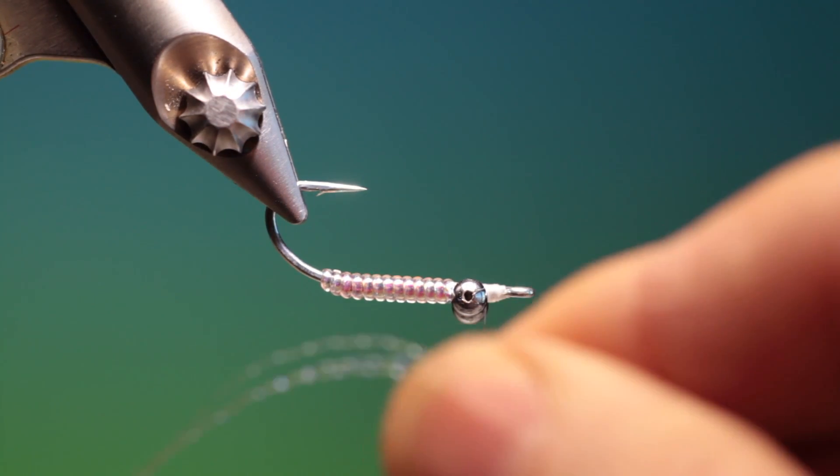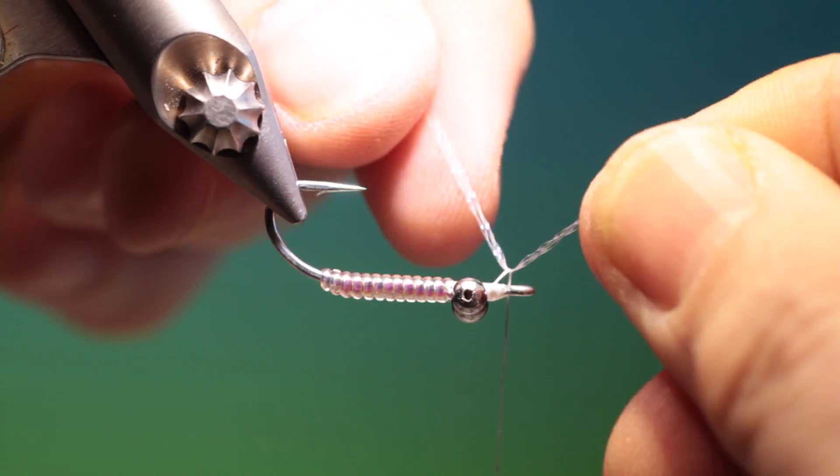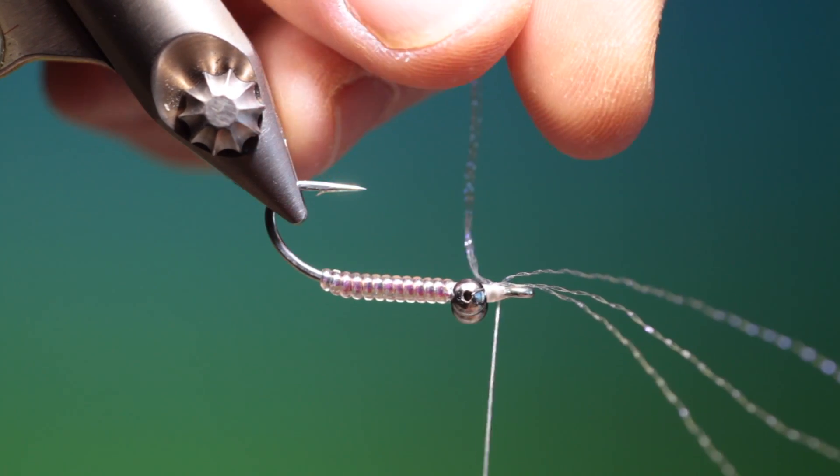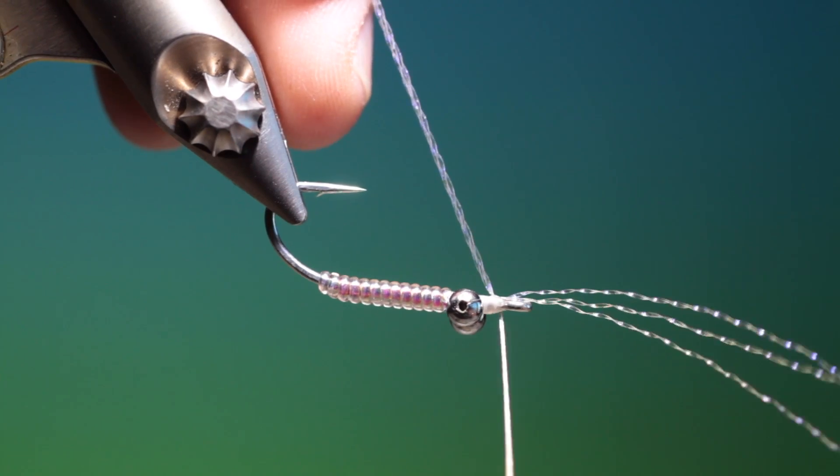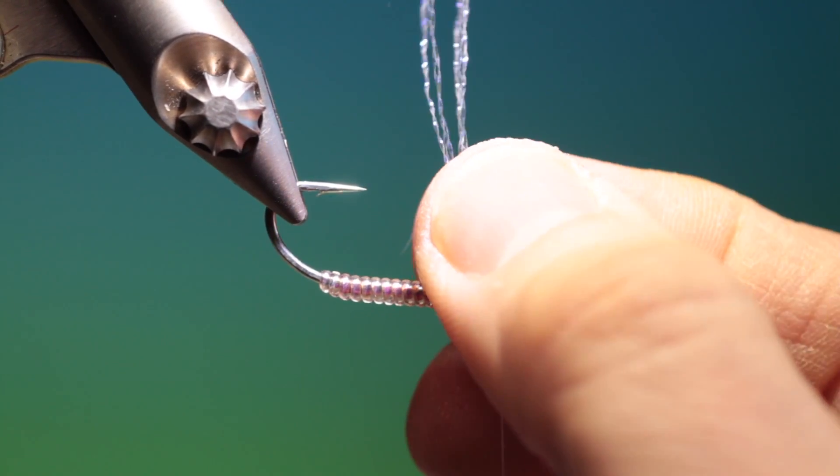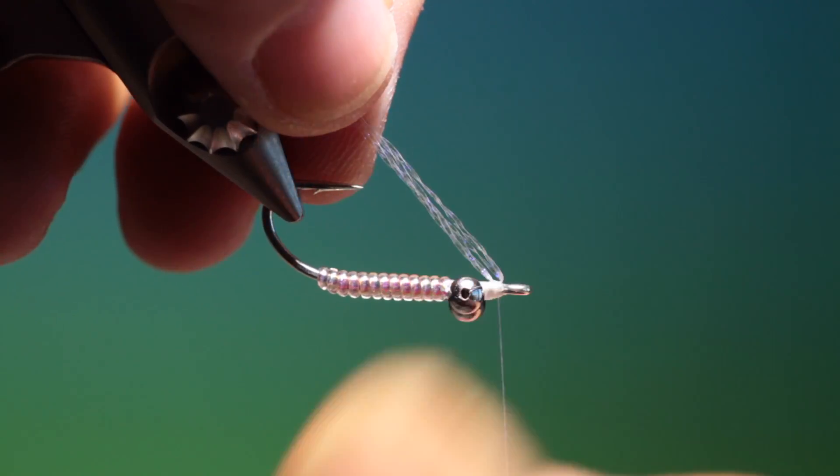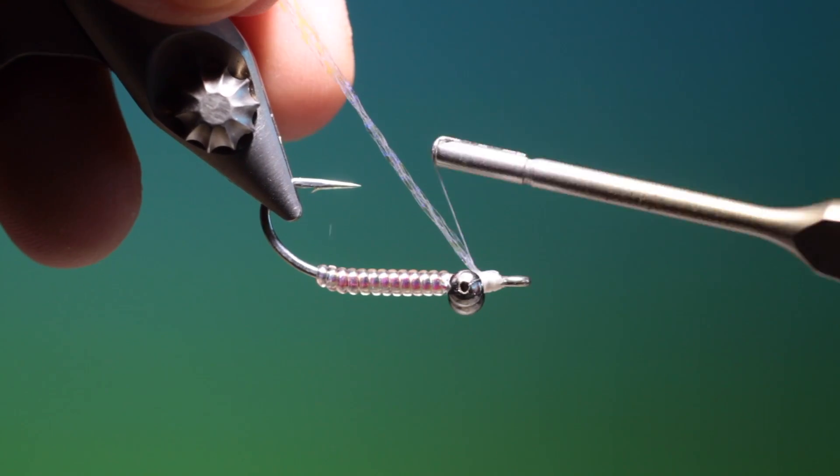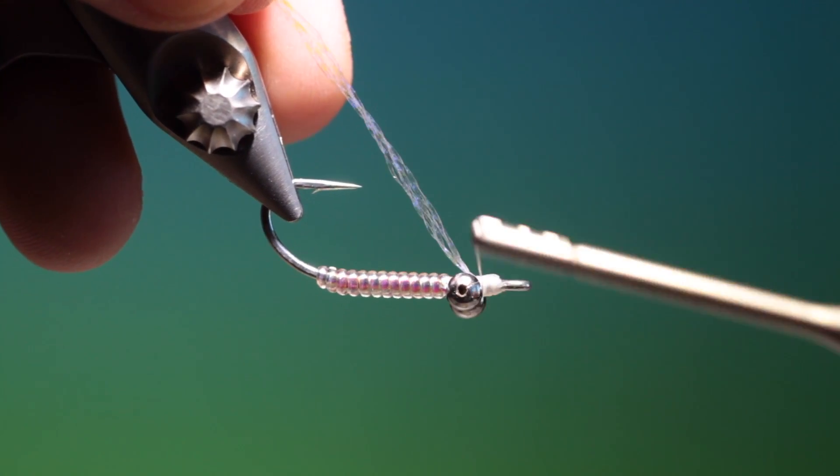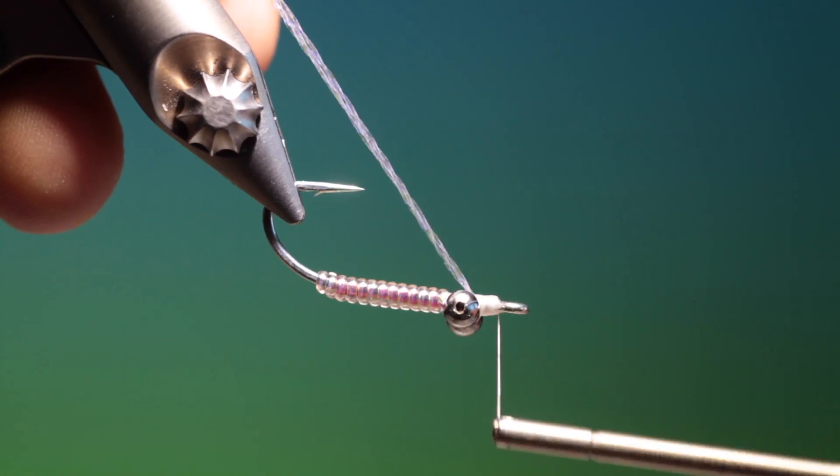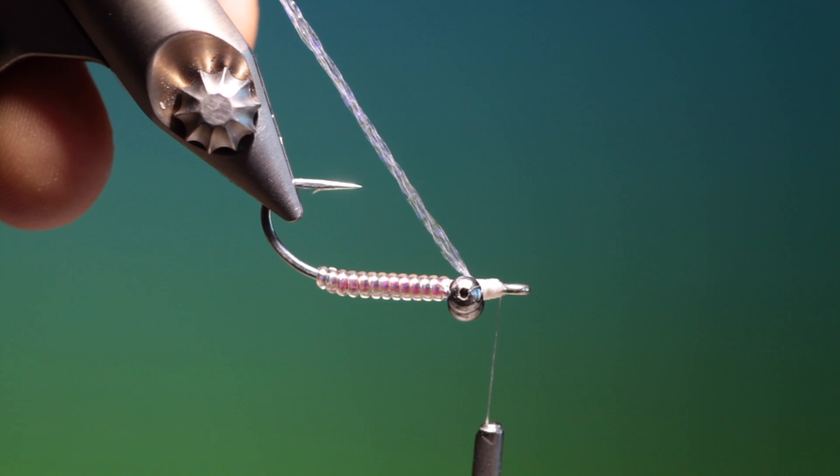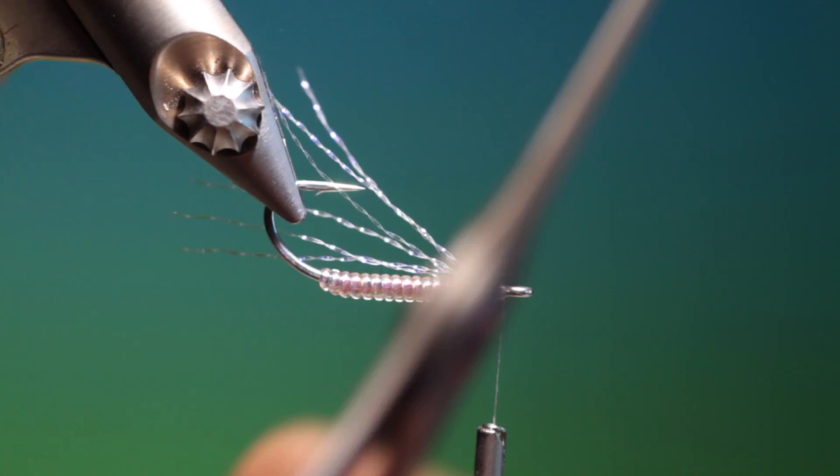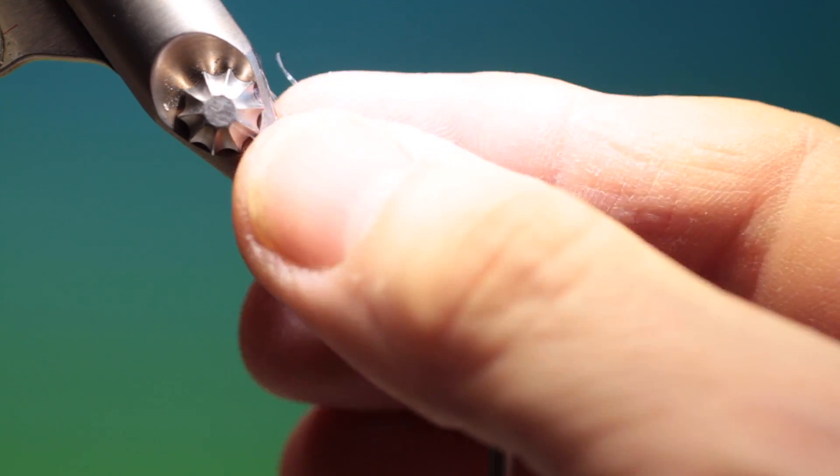Three strands of crystal flash. We'll just take these up under the tying thread like that. A couple of turns just to secure them. Then we fold everything back and we go back, go forward again. And we can trim these off about there, they should cover the hook point and bend.